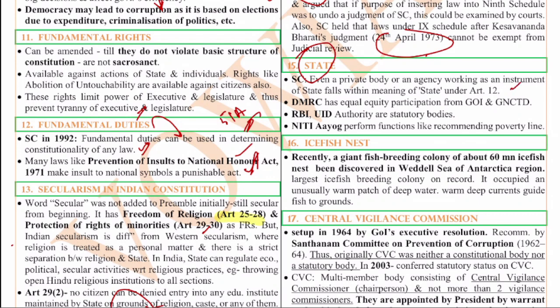The DMRC has equal participation from the Government of India and GNCT, so it is part of the definition of state. RBI and UIDAI are statutory authorities. NITI Aayog performs functions like recommending the poverty line. These are examples discussed under the definition of state.